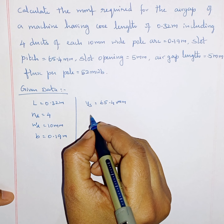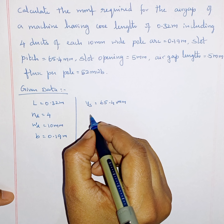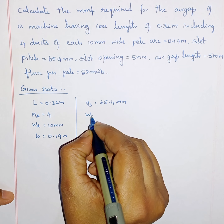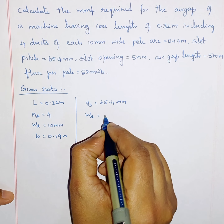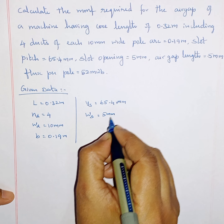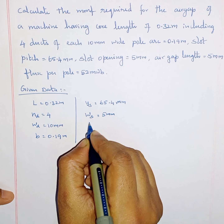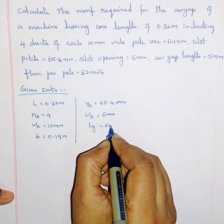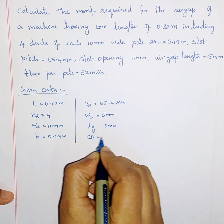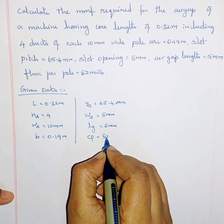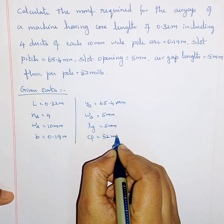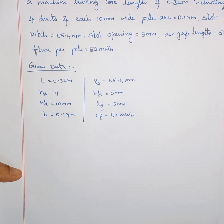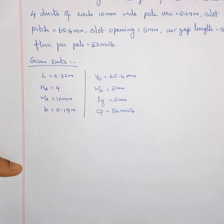Slot opening, based on that we are going to calculate MMF for the slotted armature. Width of the slot is the slot opening, so 5 mm. Length of the air gap LG is 5 mm, and flux per pole is given as 52 mWb.